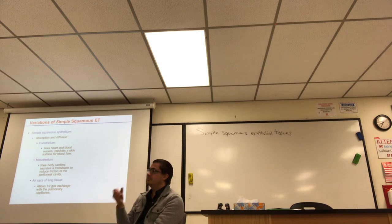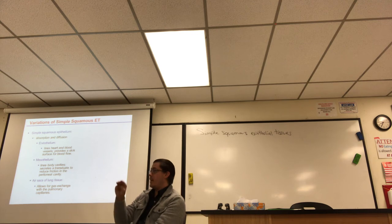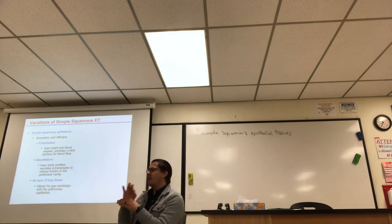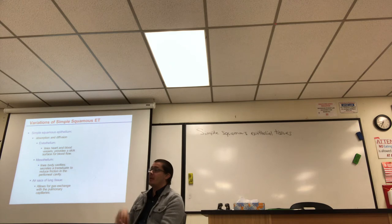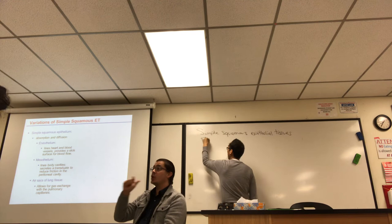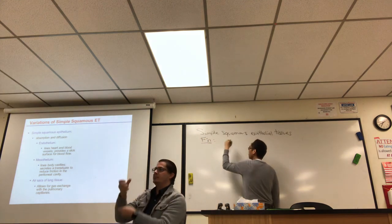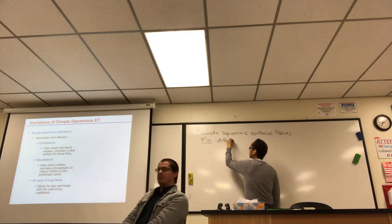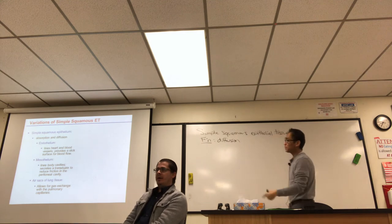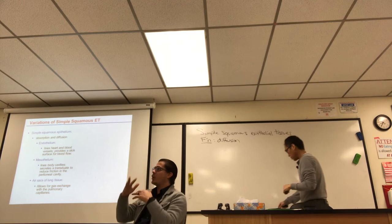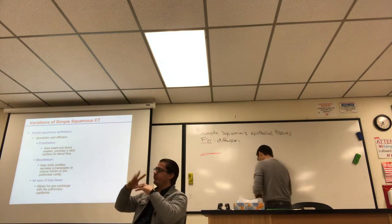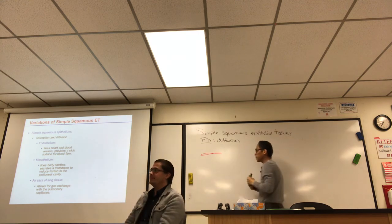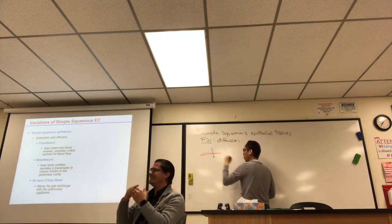The three examples of simple squamous epithelial tissue are: endothelium, mesothelium, and air sacs. The general function of simple squamous ET is absorption and diffusion — because it is only one cell layer thick, molecules can easily cross. The endothelium is a simple squamous epithelium that forms the innermost lining of blood vessels, as part of the tunica intima.